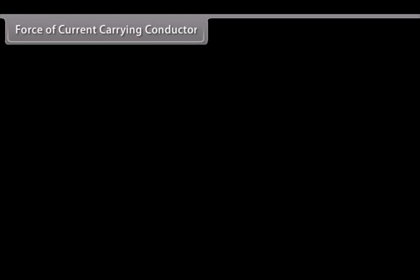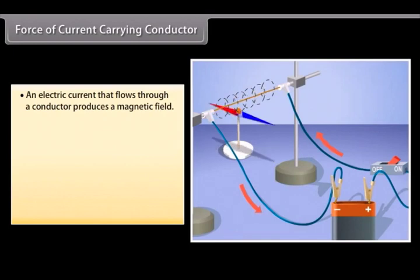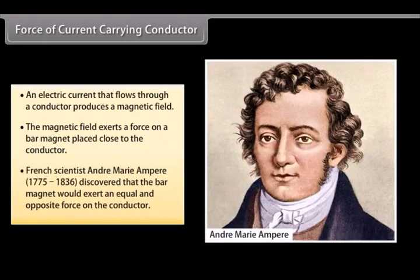Force of Current-Carrying Conductor. We have seen that an electric current that flows through a conductor produces a magnetic field. The magnetic field so produced exerts a force on a bar magnet placed close to the conductor. French scientist André-Marie Ampere, 1775 to 1836, discovered that the bar magnet would also exert an equal and opposite force on the conductor.